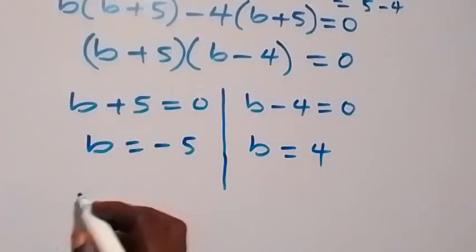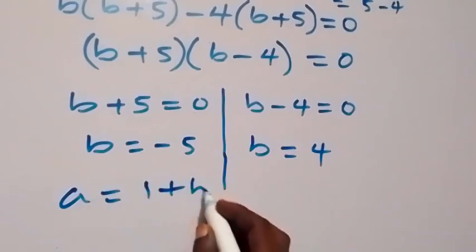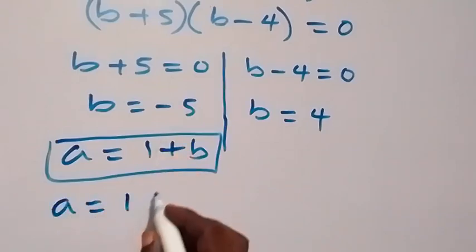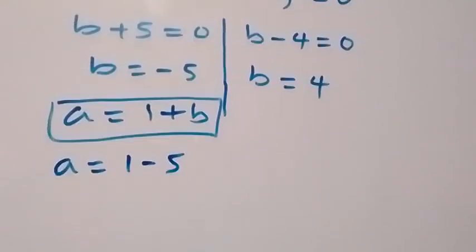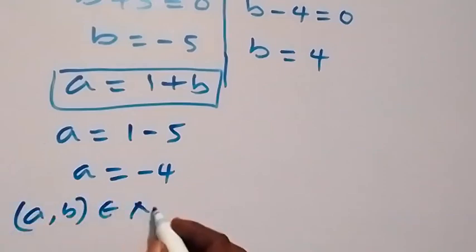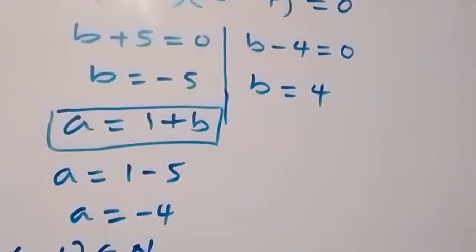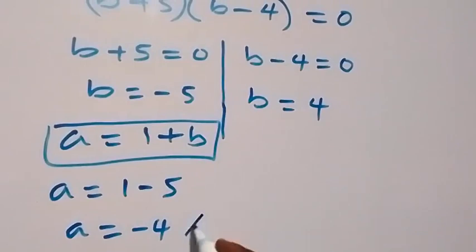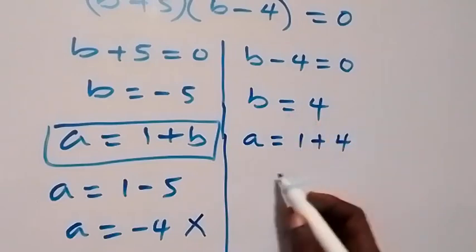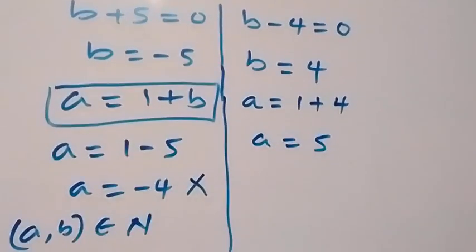From our derivation, a equals 1 plus b. For b equals minus 5: a equals 1 plus minus 5, which gives a equals minus 4. But recall that a and b must be natural numbers — counting numbers — so negative values are not valid solutions. Therefore b equals minus 5 is rejected. For b equals 4: a equals 1 plus 4, so a equals 5.